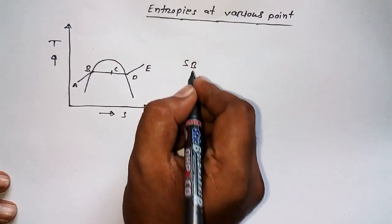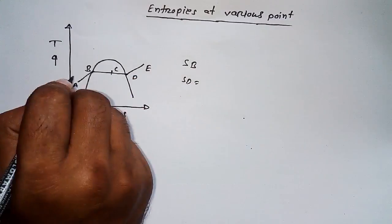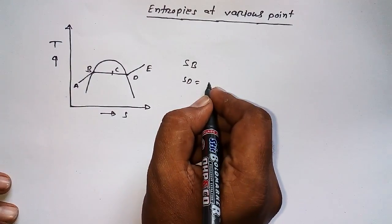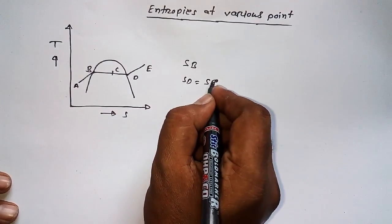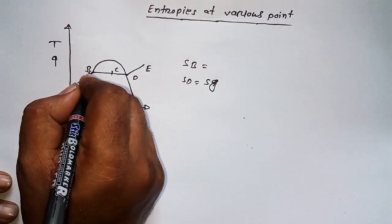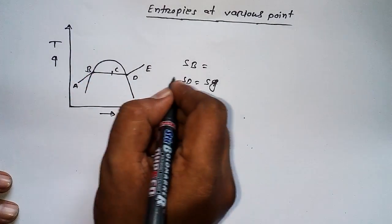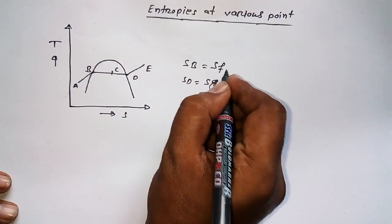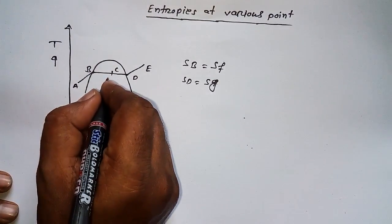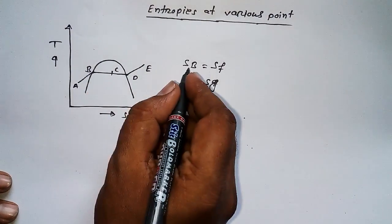Let me share with you a few points. S_B and S_D: at this point we have saturated vapor, that's why this will be directly S_g. At this point we have saturated liquid, that's why it would be directly S_f. Now if I try to calculate entropy under this section...